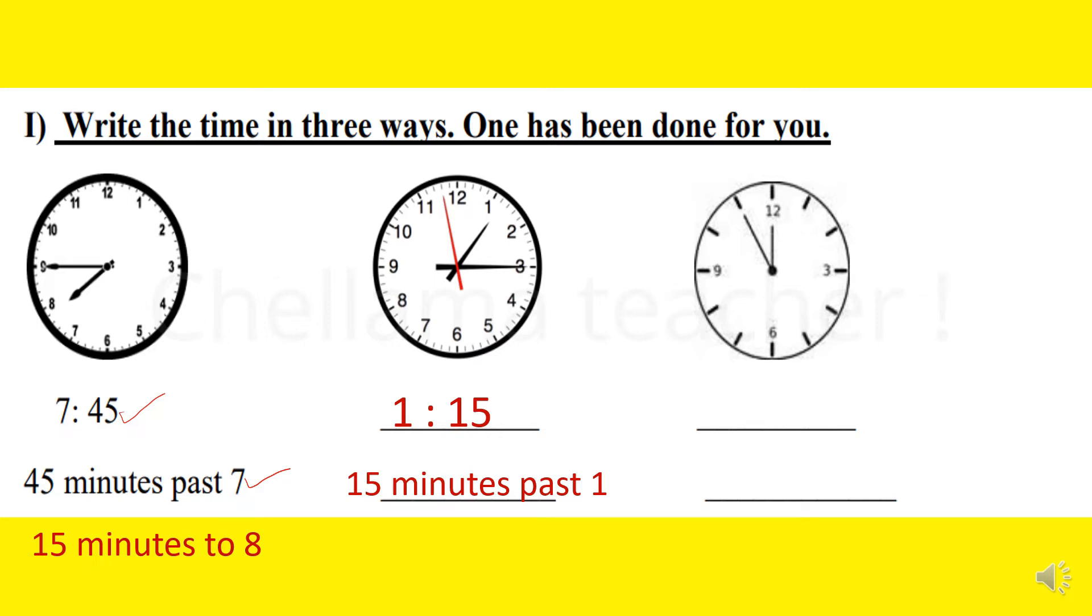Next, go for the next clock. In this, the hour hand points on 12 and minute hand points on 11. So the time is 11:55. We can say 55 minutes past 11 or 5 minutes to 12.